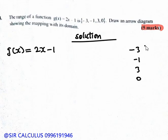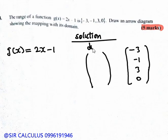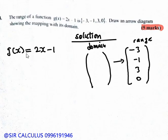So here we set up the arrow diagram. On this side is the domain and over here is the range. The domain is what we need to find — we use the function g(x) = 2x - 1 and substitute the range values.